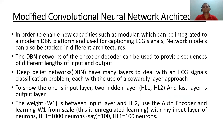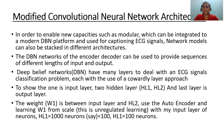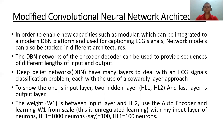In order to enable new capacities such as modular weight, which can be integrated into the modern DBN platform used for captioning ECG signal network models: the DBN network of the encoder-decoder can be used to provide sequences of different input and output lengths, giving us a wide range of wavelength frequencies in which we can operate. The architecture shows one input layer, two hidden layers H1 and H2, and a final output layer.